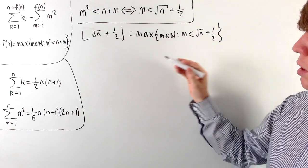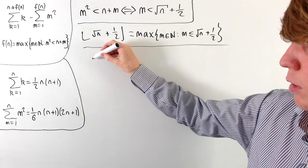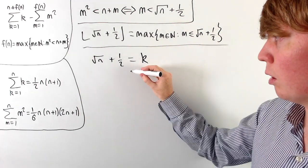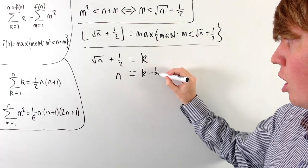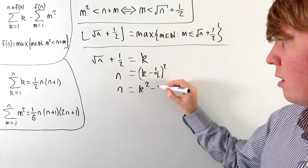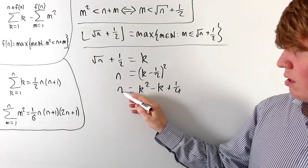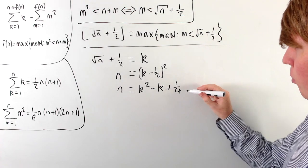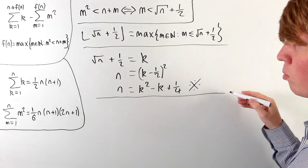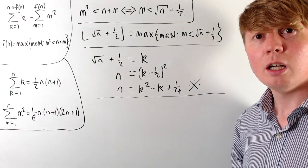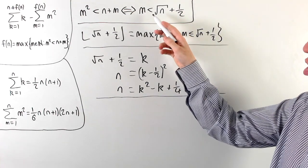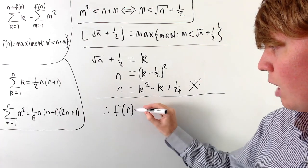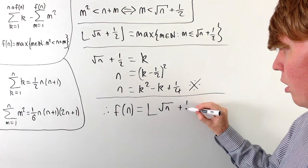Fortunately, √n + 1/2 can never be an integer. We verify this: if √n + 1/2 = k for some integer k, then subtracting 1/2 and squaring gives n = (k − 1/2)² = k² − k + 1/4. But that would mean an integer equals another integer plus 1/4 — a contradiction. Therefore √n + 1/2 is never an integer, and we can conclude that f(n) = floor(√n + 1/2).